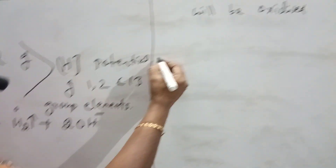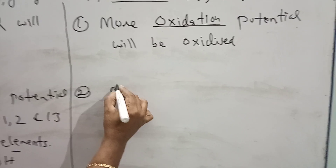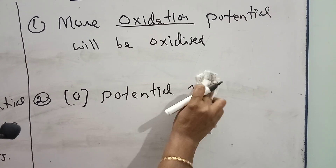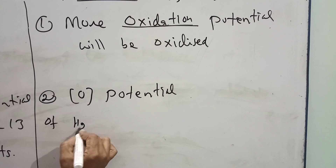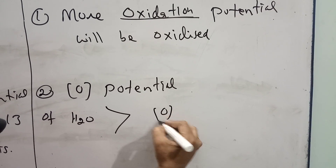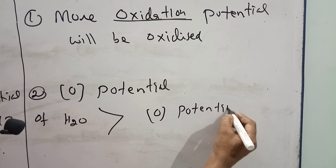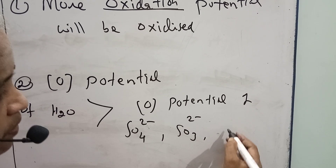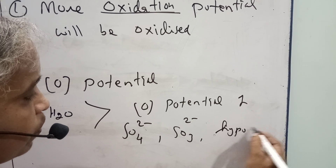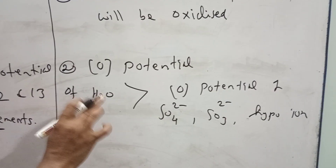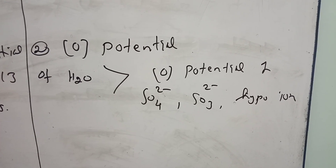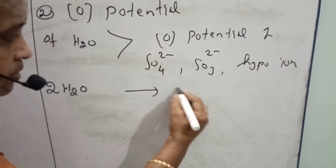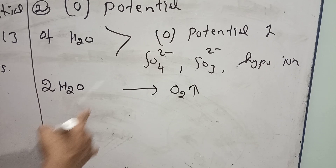Now the next condition: the oxidation potential of water is greater than the oxidation potential of sulfate, sulfite, and hypo-ions. So your oxidation potential of water being higher means water will be getting oxidized. Let us write the equation for oxidation of water. It gives oxygen gas — oxidation is loss of electron — and 4 H⁺ ions and 4 electrons.